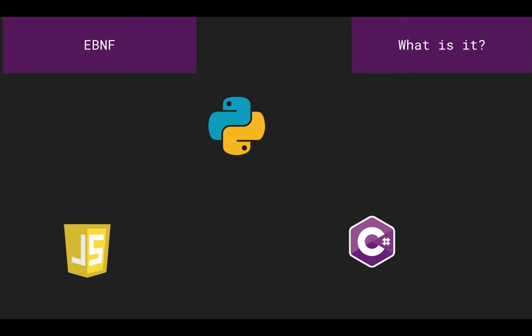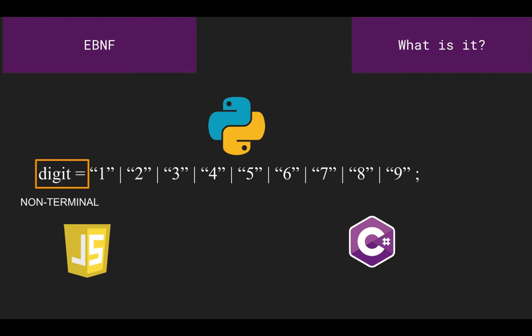eBNF works by using production rules of non-terminal and terminal production rules, where the production rules are the definitions that govern how those terminals and non-terminal symbols are organized and sequenced. For example, in this line, we see that the product of digit is being defined by a set of numbers between 1 to 9, where the digit is considered as a non-terminal, and the numerical values are considered as terminals.